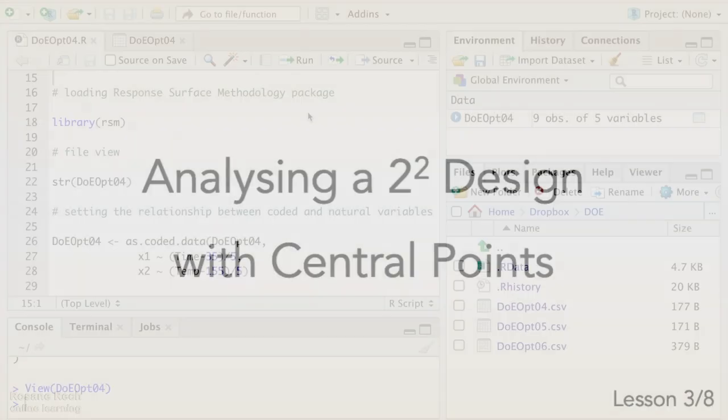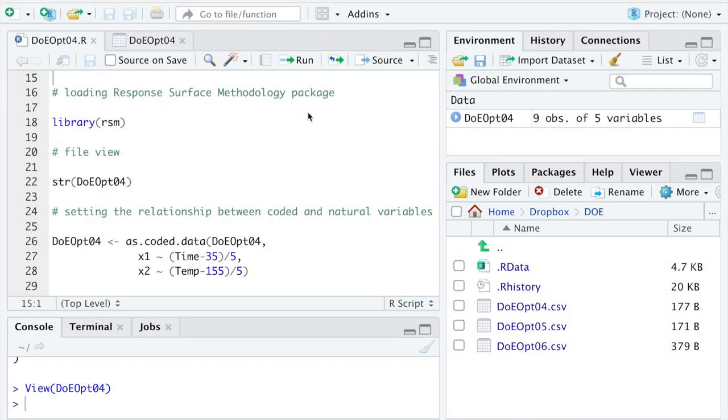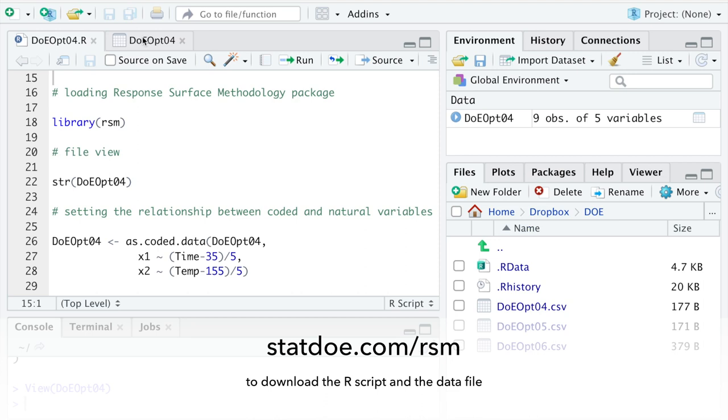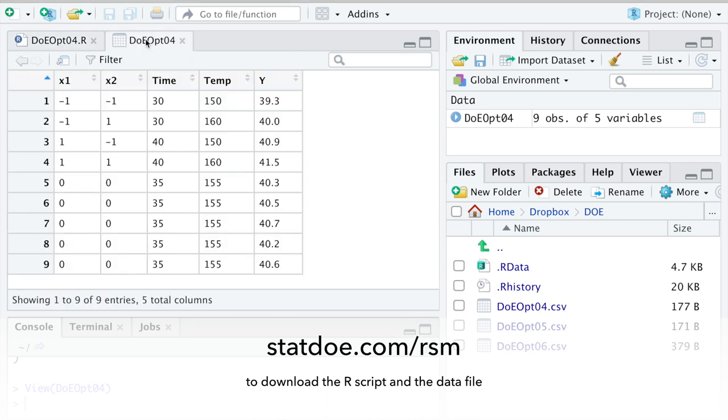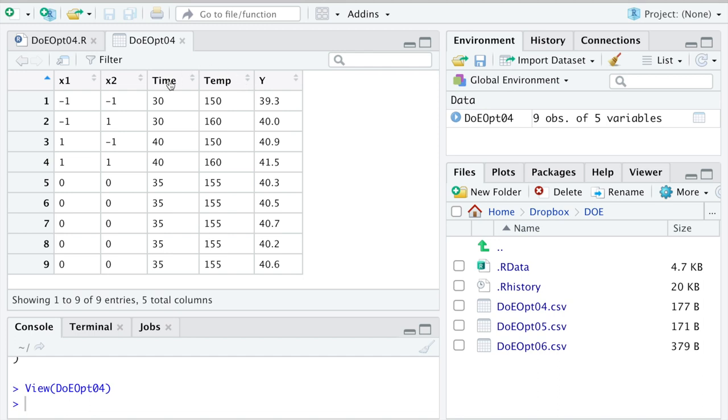Welcome back! Here I have the R code and the data files already open. The data file shows the coded variables x1 and x2, the natural variables time and temperature, and the response y, the yield.